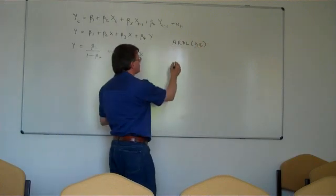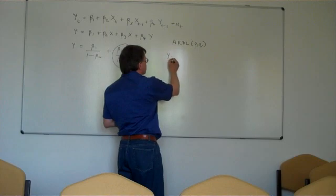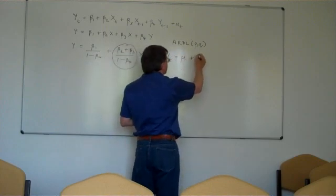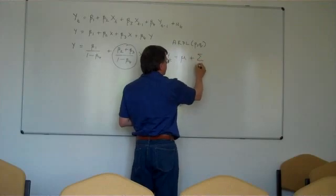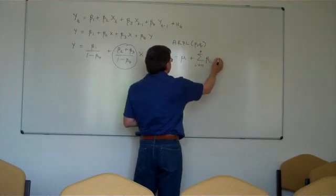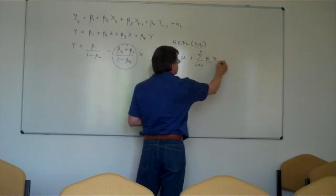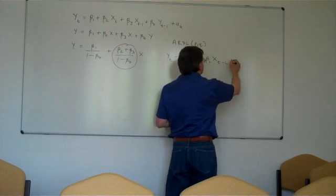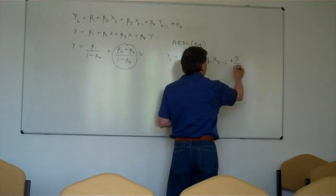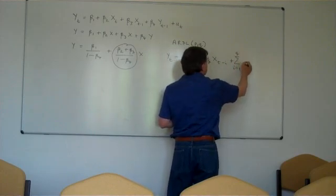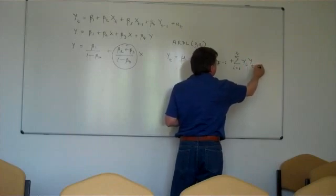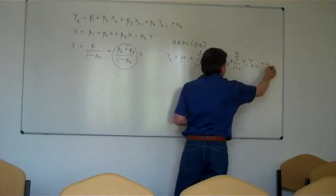Now we can write a model of this form as yt equals an intercept term plus the sum from i equals 0 to p of beta i times xt minus i plus the sum from i equals 1 to q of gamma i times yt minus i plus the random error term ut.